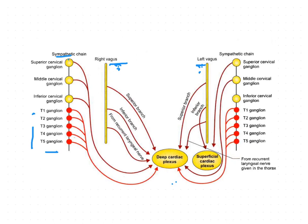The superficial cardiac plexus is formed by the superior cervical cardiac branch of the left sympathetic chain — specifically from the superior cervical ganglion of the left sympathetic chain — and also the inferior cardiac branch of the left vagus nerve.